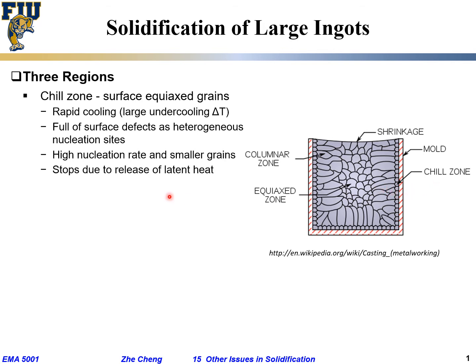Inside the chill zone, moving toward the interior, we have the so-called columnar zone. The formation of fine grains in the chill zone quickly stops because when the liquid solidifies it releases the so-called latent heat, which dramatically raises the temperature. This is what people call the columnar zone.